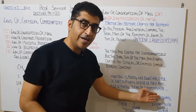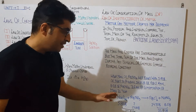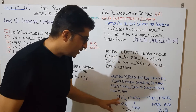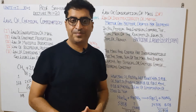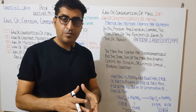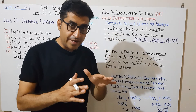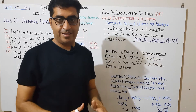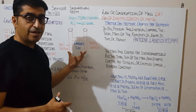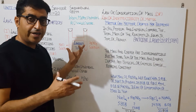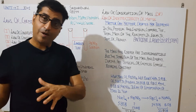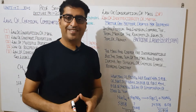When the solutions are mixed, the reaction produces silver chloride (AgCl) and sodium nitrate. Silver chloride has very low solubility in water and precipitates out as a white precipitate. Before the reaction, the total mass was 22.85 grams.